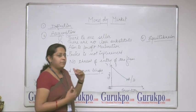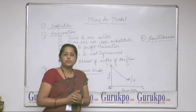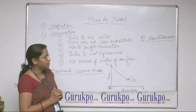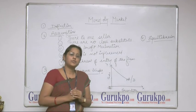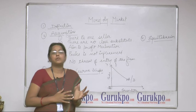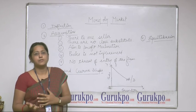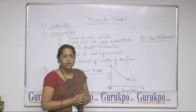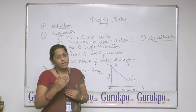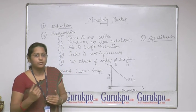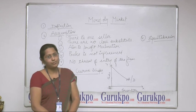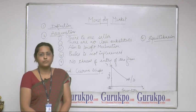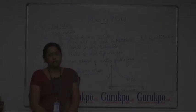We will now look at the equilibrium conditions of a monopoly firm. The equilibrium condition is that marginal cost should equal marginal revenue — MC should equal MR — and MC should cut MR from below. Thank you. For further details, you should visit www.gurukpo.com.